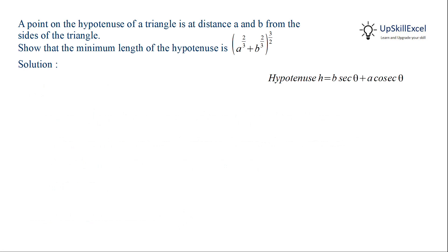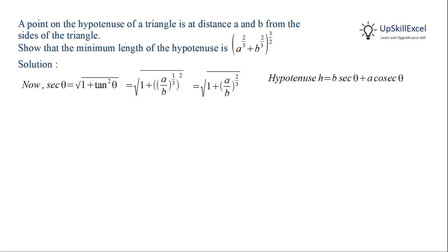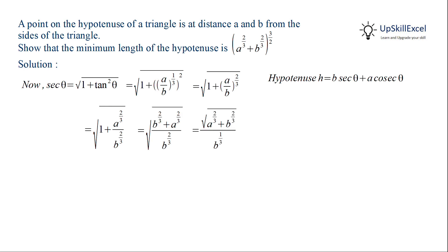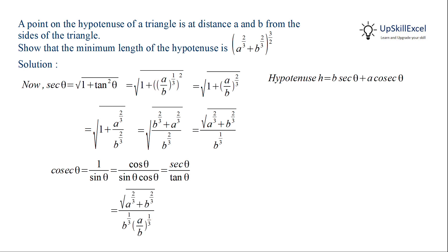Now, hypotenuse equals B sec theta plus A cosec theta, so we need to find sec theta and cosec theta. We know that sec theta equals the square root of 1 plus tan squared theta. Substituting the value of tan theta and taking B raised to 2 over 3 common in the denominator, then bringing it outside the square root, we get sec theta equal to the square root of A raised to 2 over 3 plus B raised to 2 over 3, divided by B raised to 1 over 3. Similarly, cosec theta equals sec theta over tan theta, which gives cosec theta equal to the square root of A raised to 2 over 3 plus B raised to 2 over 3, divided by A raised to 1 over 3.